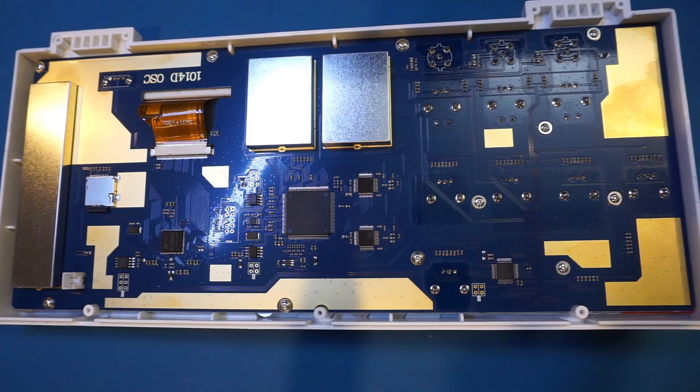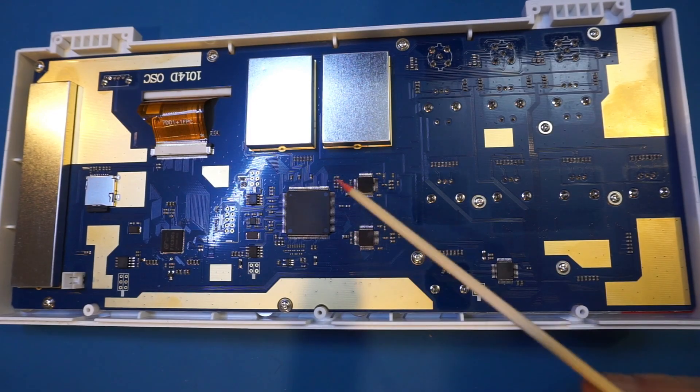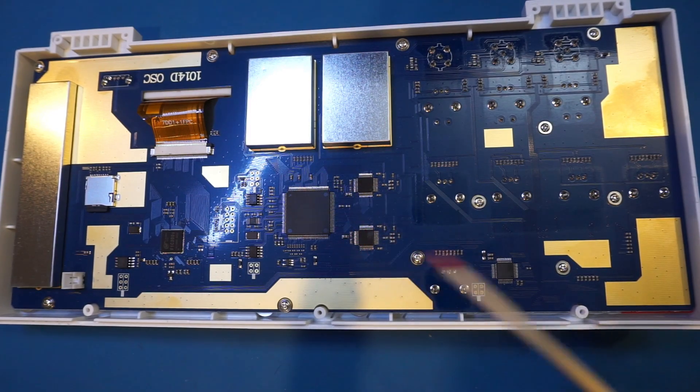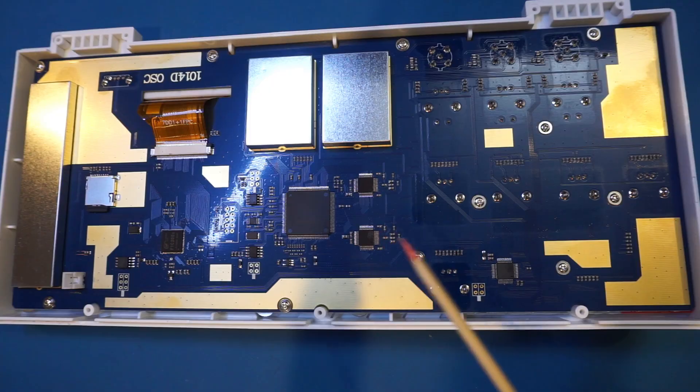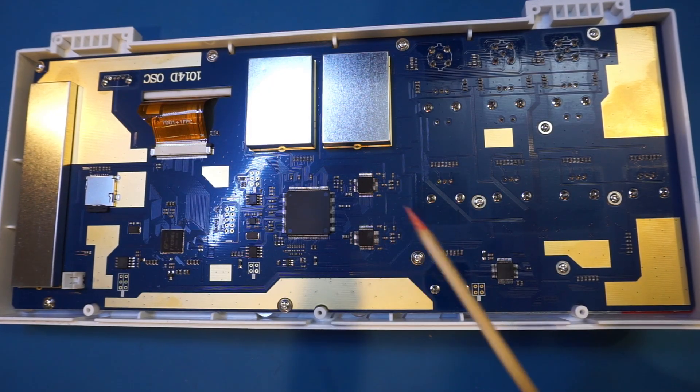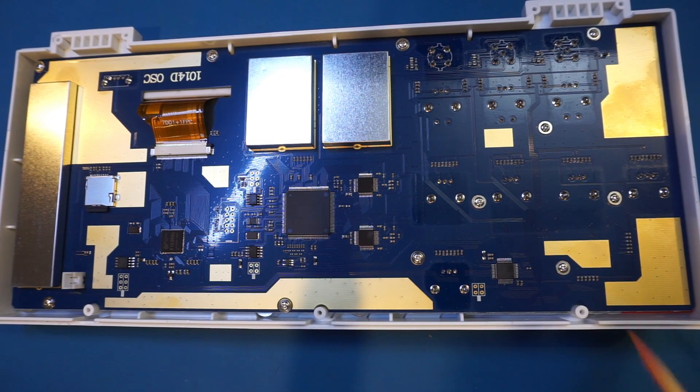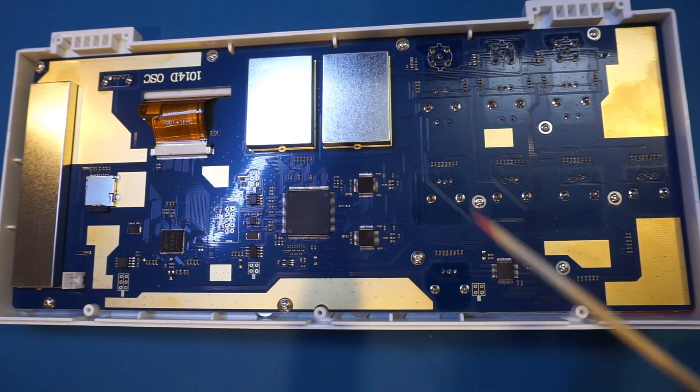We have seen this chip used in the Hantek DSO 2D10 I reviewed a while back. The ASIC used in this scope of course is a no-name brand, and I assume these chips without any markings are probably ADC or perhaps DAC chips. Given the performance we saw earlier, most definitely these chips are not up to the spec required for the advertised bandwidth.